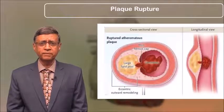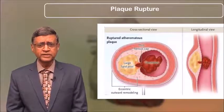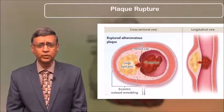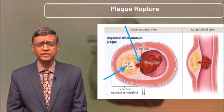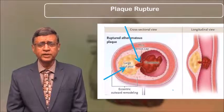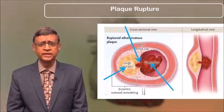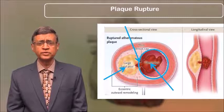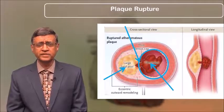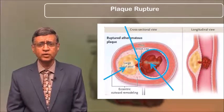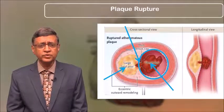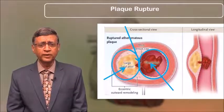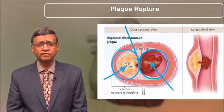Look at this plaque that is ruptured. You can see that there is a large lipid pool and a thin fibrous cap that has ruptured, producing a thrombus. You can also see that there is no stenosis just before the thrombus occurred — hardly any stenosis — and you can see the positive outward remodeling of the vessel.